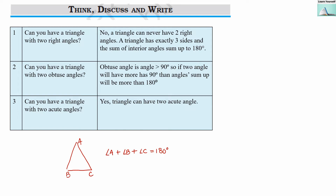The first question is: can you have a triangle with two right angles? A right angle measures 90 degrees. If we have two right angles in one triangle — for example, angle A and angle B both equal 90 degrees — then the addition of both angles will already be 180 degrees. So what would the measure of angle C be? Therefore, any triangle cannot have two right angles. Only one right angle can be possible in a triangle.